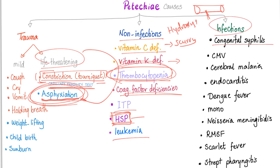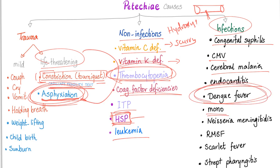Infectious causes include congenital syphilis, CMV, cerebral malaria, endocarditis, dengue fever, infectious mononucleosis, Neisseria meningitis, Rocky Mountain spotted fever, scarlet fever, strep pharyngitis, and typhus.